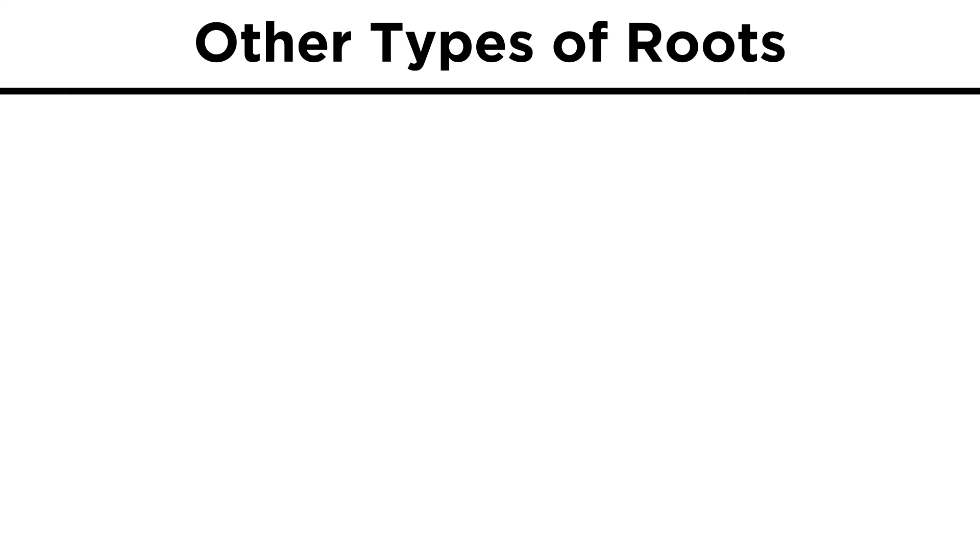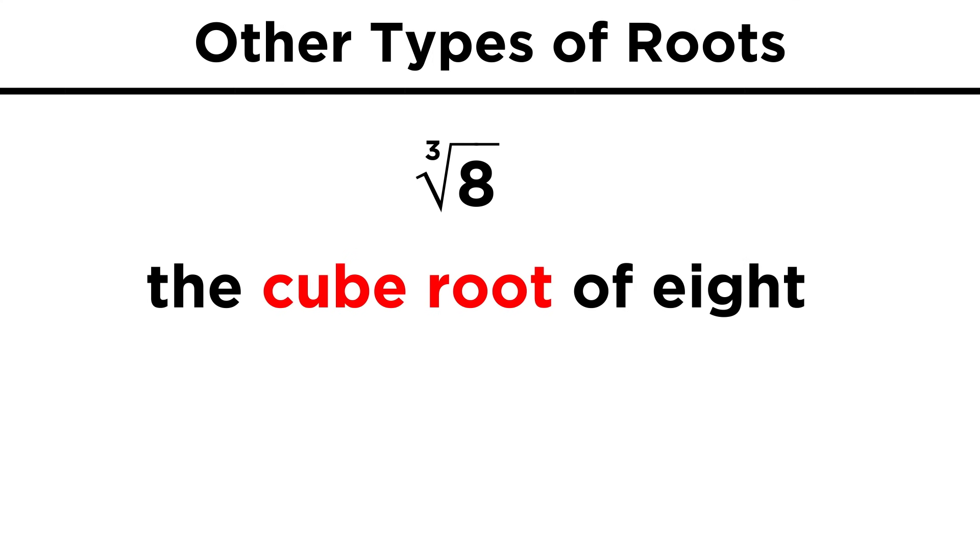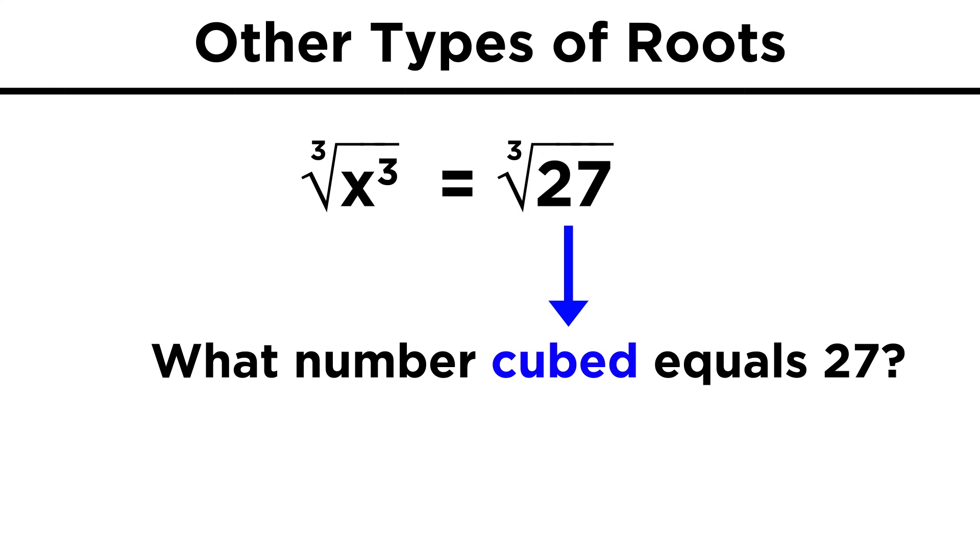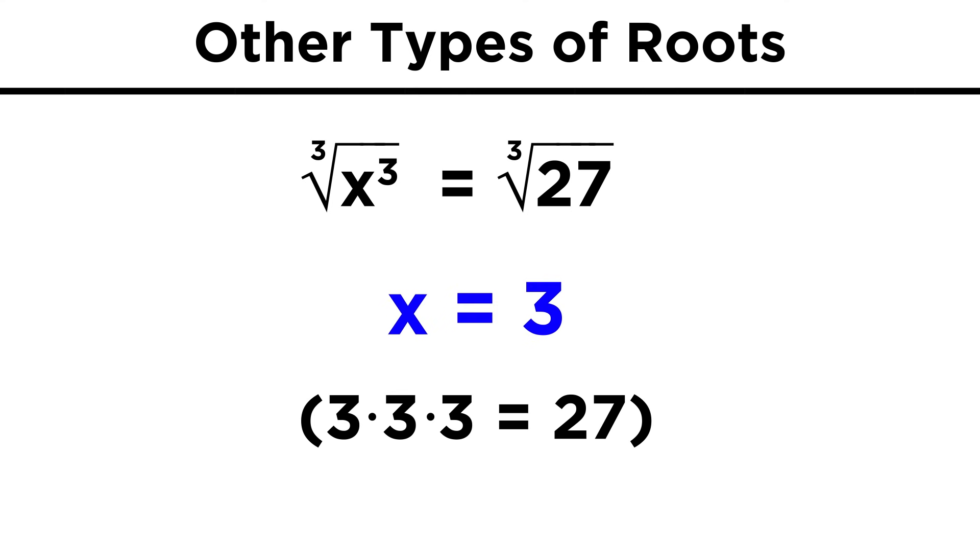Are there other roots we can take besides the square root? Certainly, we can take the cube root. This is the opposite of cubing something, or raising it to the third power. If x cubed is twenty-seven, what is x? We will now have to take the cube root of both sides. This is like saying what number raised to the third power will give the number inside this root. In this case, the answer is three, because three times three times three equals twenty-seven.